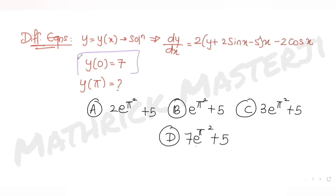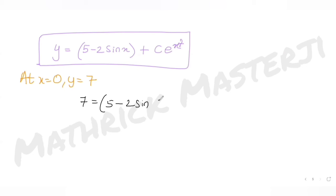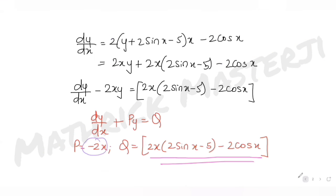Now applying the initial condition: at x = 0, y = 7. Substituting into the general solution: 7 = 5 − 2sin(0) + C·e^0. Since sin(0) = 0 and e^0 = 1, this gives 7 = 5 + C, so C = 2. The constant of integration is 2.